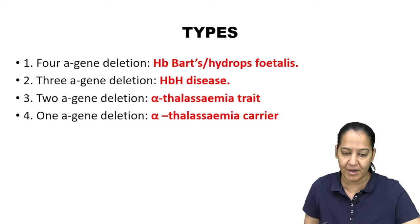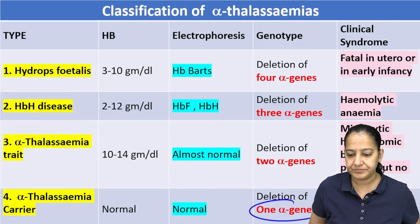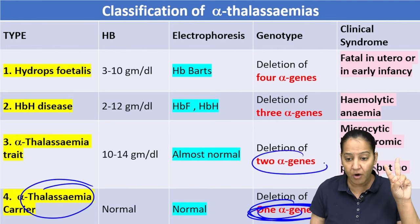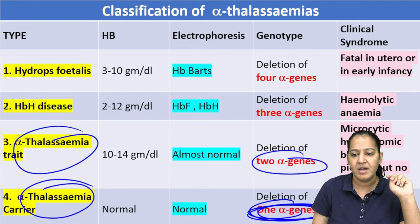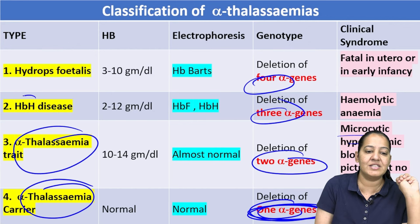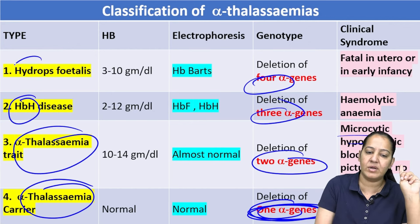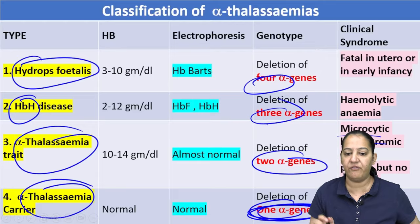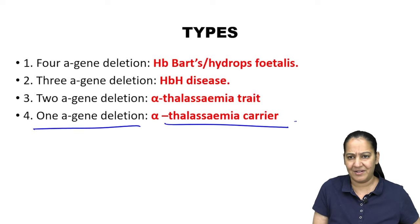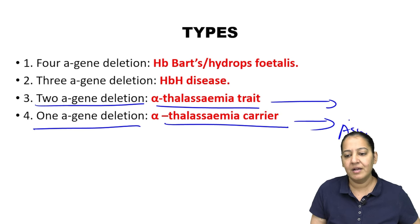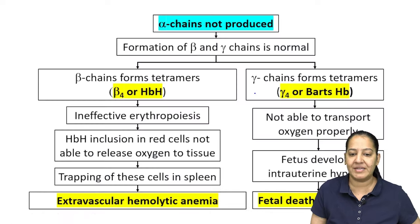The four types of alpha thalassemia based on number of deleted genes: if one gene is deleted — alpha thalassemia carrier, asymptomatic. If two genes are deleted — alpha thalassemia trait, mild or no anemia, asymptomatic. If three genes are deleted — hemoglobin H disease, moderately severe. If all four genes are deleted — hydrops fetalis, the most severe form.